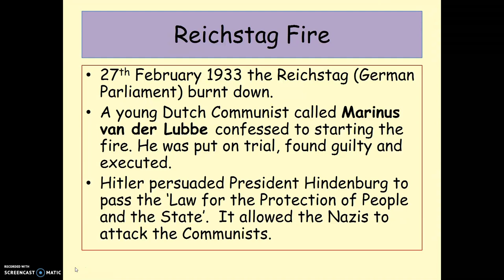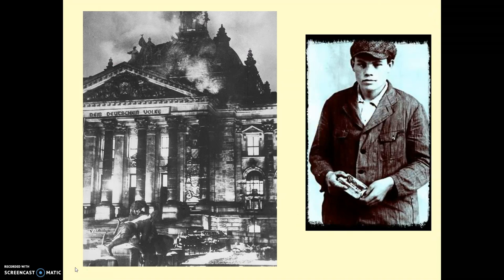The fire was blamed on a young Dutch communist called Marinus van der Lubbe, who was put on trial and executed. Hitler used this event to portray the communists as extremely dangerous and a real threat to national security. He persuaded President Hindenburg to pass the Law for the Protection of People and the State, which allowed the Nazis to attack the communists, round them up, and imprison them without trial. The Reichstag fire was a really important event, and there you can see a picture of it, along with a picture of Marinus van der Lubbe.